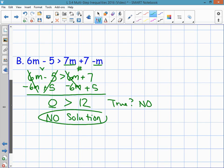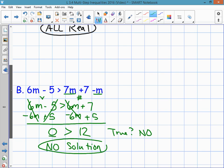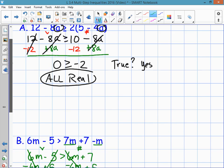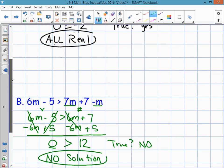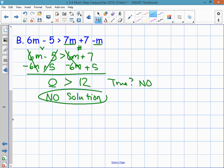So the two special cases you're going to find with inequalities are similar to equations. One, where the variables drop out and it's true, the answer is all reals. The other one, where the variables drop out and it's not true, is no solution.